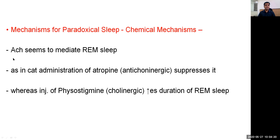Regarding the chemical mechanism: acetylcholine appears to mediate REM sleep. In experimental animals, administration of atropine, which is anticholinergic, suppresses REM sleep. Whereas injection of physostigmine, which is cholinergic, increases the duration of REM sleep. Therefore, acetylcholine seems to mediate this variety of sleep.